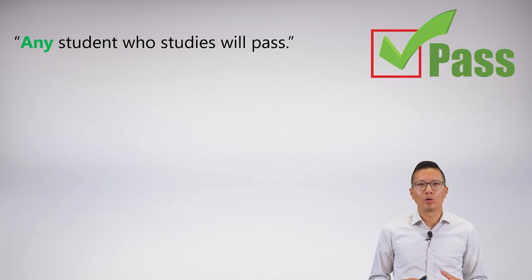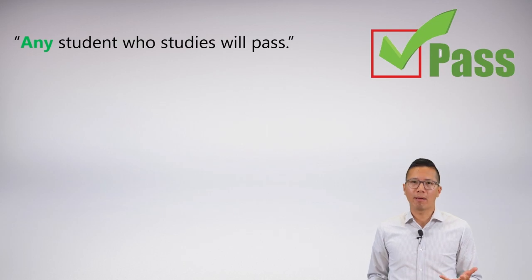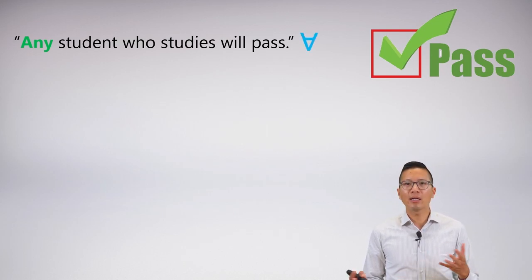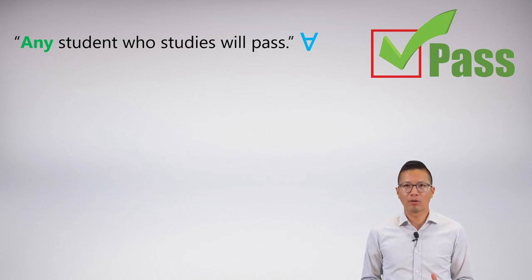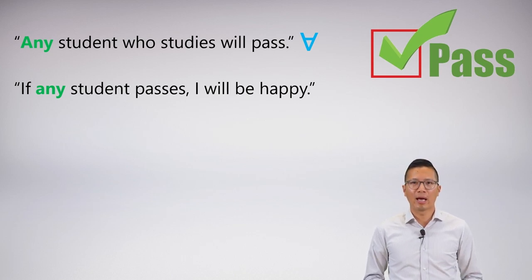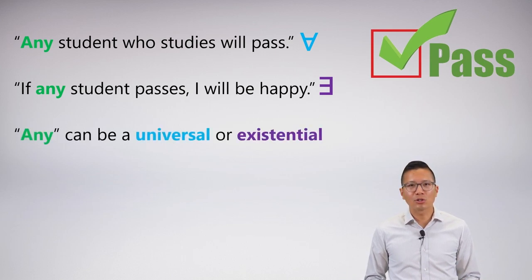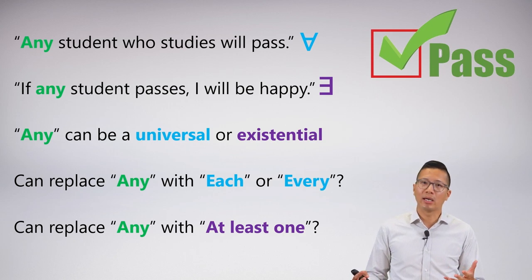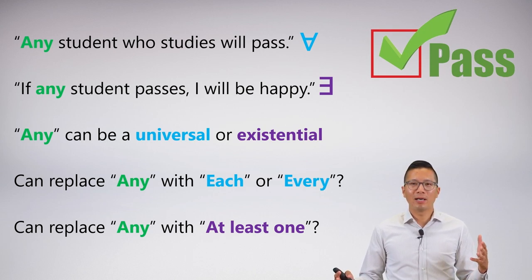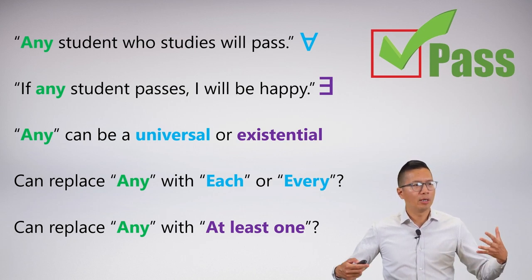I find the word 'any' particularly annoying. 'Any student who studies will pass' — I'm making a claim about students in general, which is a universal claim. But 'if any student passes, I will be happy' — this clearly isn't saying if every single student passes. It's saying if at least one student passes, if some student passes, I will be happy. That is obviously an existential. So 'any' can be a universal or existential depending on context. You can ask: can you replace 'any' with 'each or every', or with 'at least one'? But this is also very contextually based.